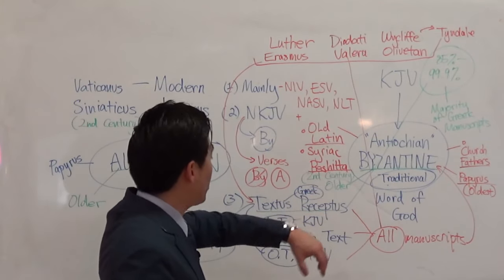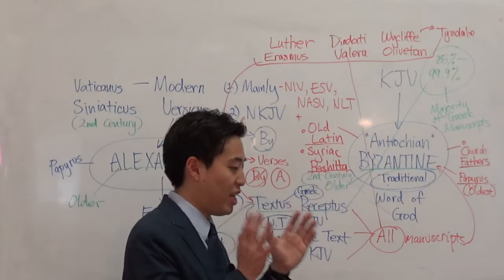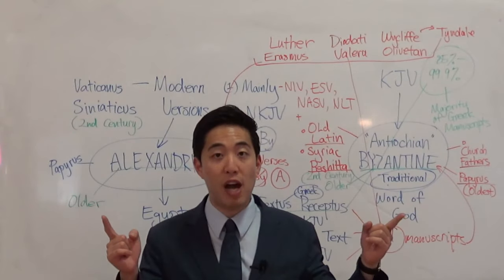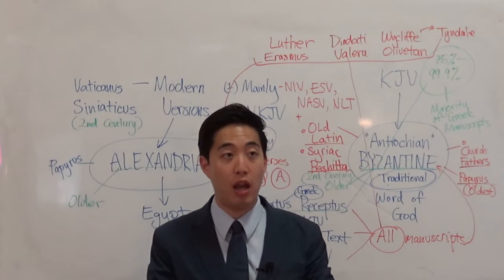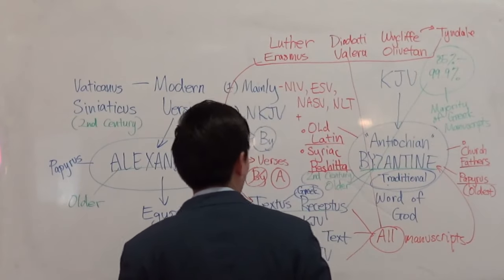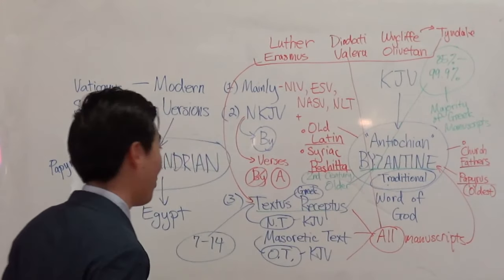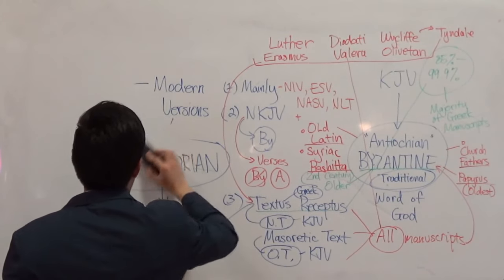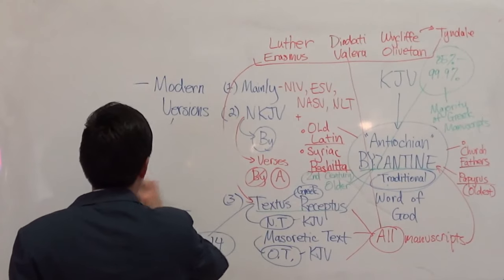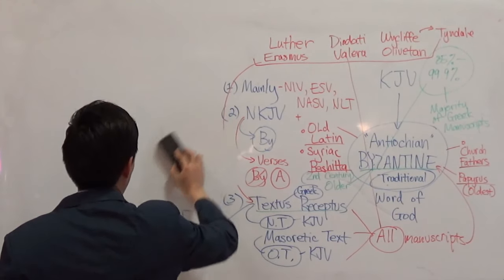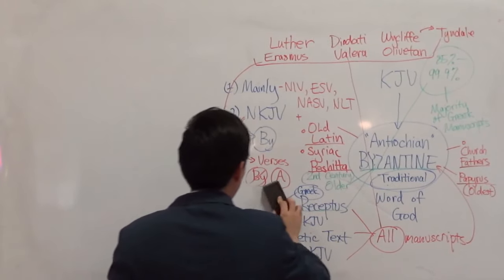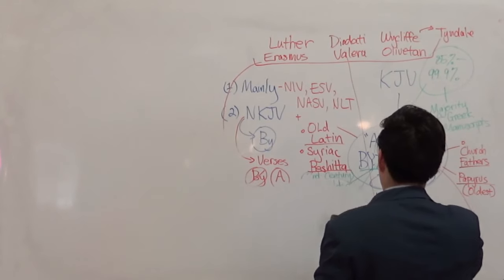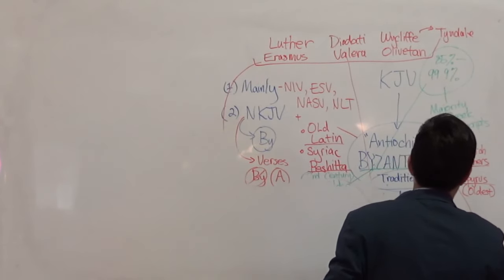This is the history of your King James Bible — understanding it helps you see why we use the King James Bible and why we reject all modern versions. Once you understand this framework, everything becomes natural for other arguments, and you just go by more specifics after that.